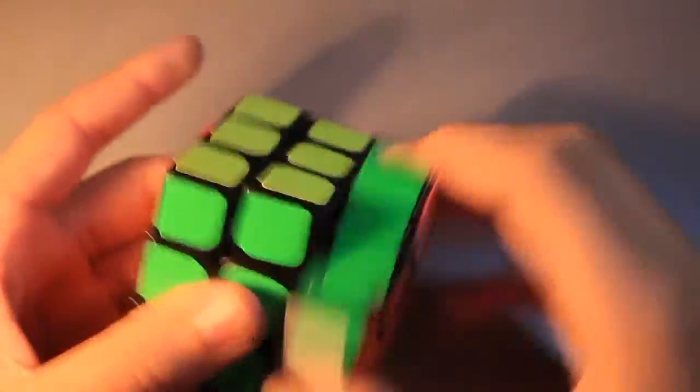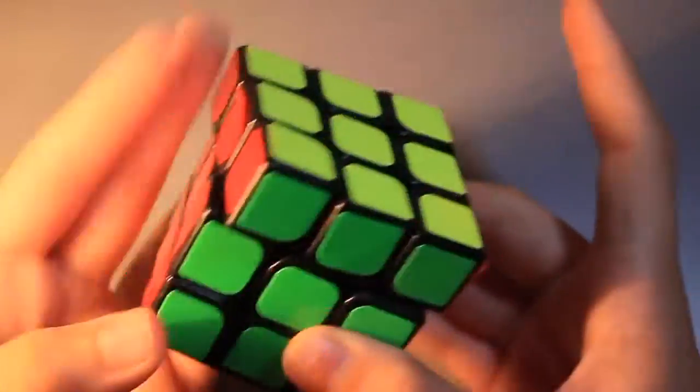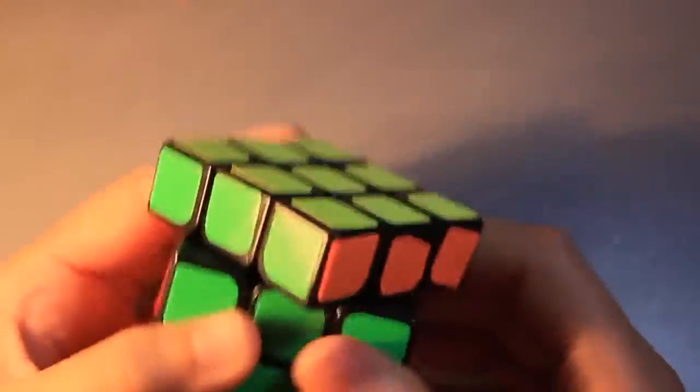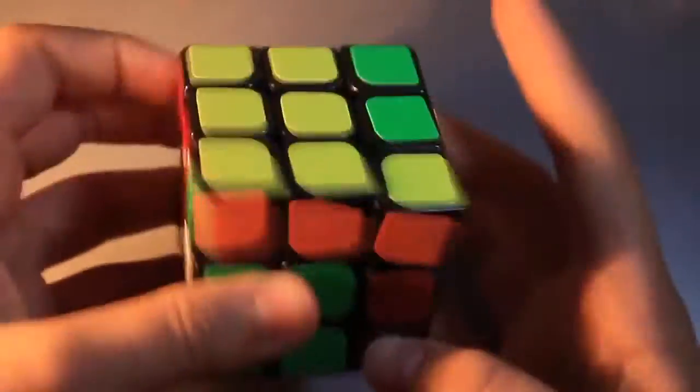And this was my first cube. So this is my second 3x3, it's the YJ Yulong. And this cube's very, very fast. I really like it. And it has this kind of creamy, buttery feeling, kind of crunchiness to it that I really like about it. And this was my first ever speed cube.